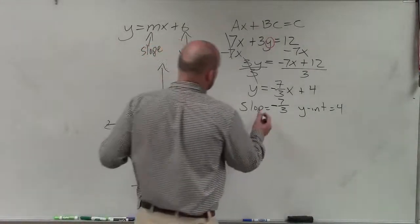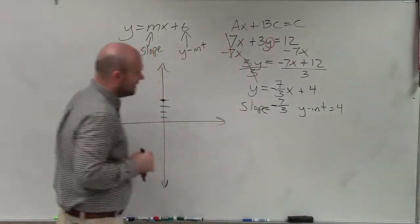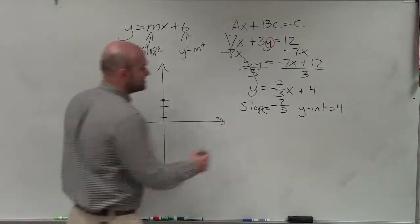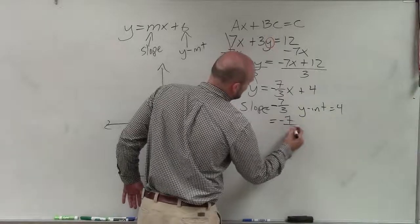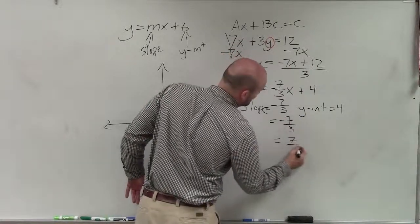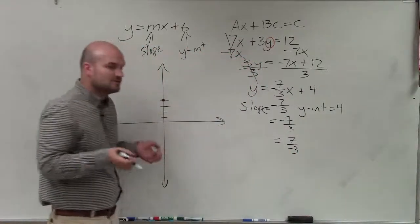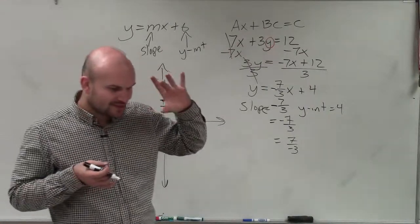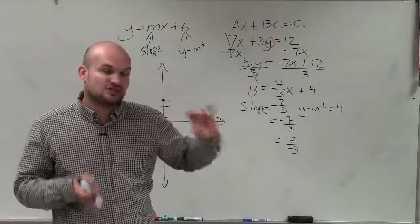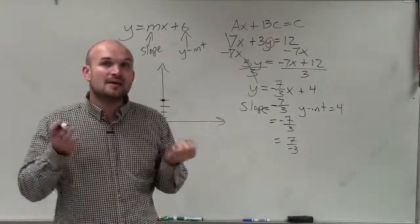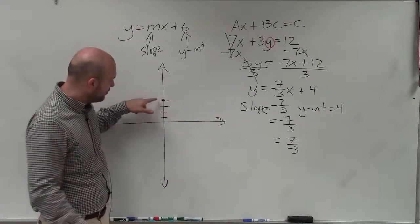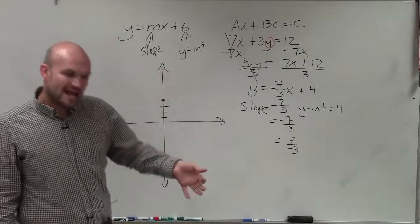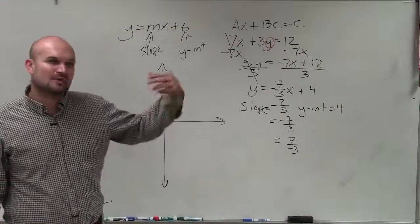Now I'm going to follow my slope, which I should call slope, at negative 7 thirds. Now remember, I said this is equivalent to negative 7 over 3. It's also equivalent to 7 over negative 3. It doesn't matter which one you want to do. Just remember, the slope represents the change between the y-values over the change in the x-values between any two points.